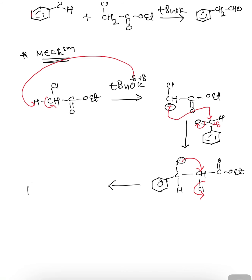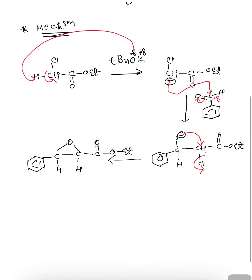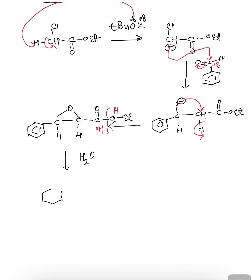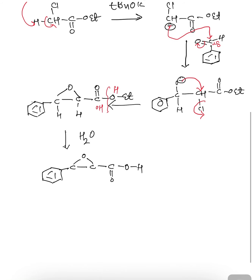The epoxide intermediate can be rewritten with the phenyl ring attached to a carbon bearing one hydrogen atom, connected to a carbon within the oxygen ring, with an ester group COOEt. This ester group is then hydrolyzed in the presence of water: the ester linkage undergoes cleavage with addition of H and OH, resulting in formation of an acidic functional group on the ring.